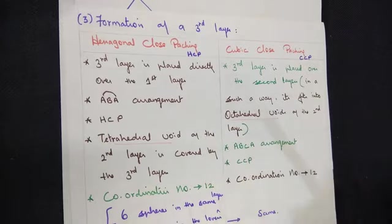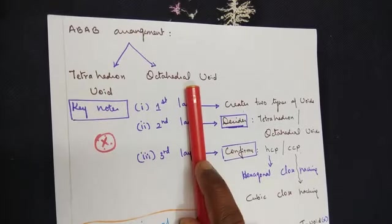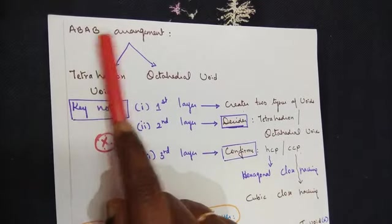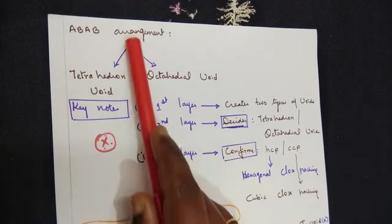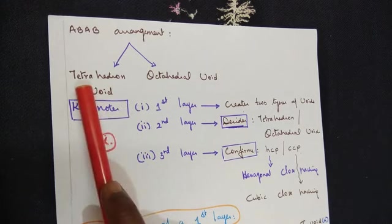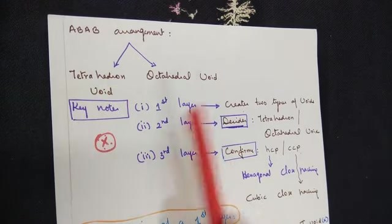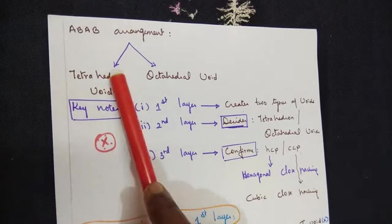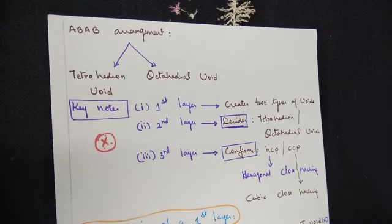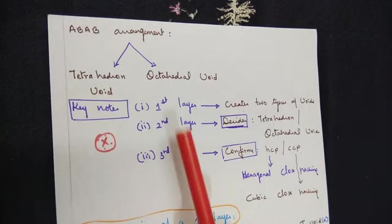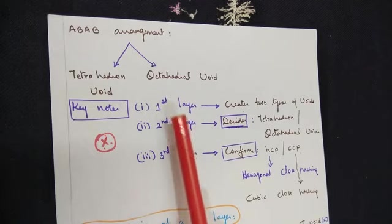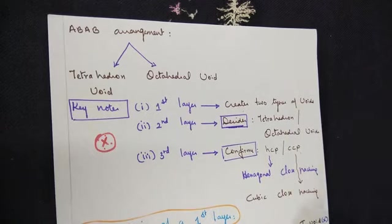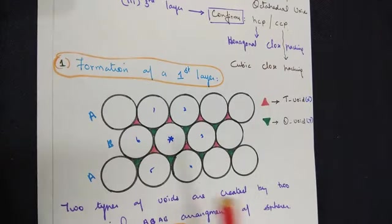Hexagonal close packing and cubic close packing are the result of the two types of voids found in an ABAB arrangement of atoms, ions, or molecules. The two types of voids are: one is a tetrahedral void, the other one is an octahedral void. To understand these voids we need to have knowledge of the work taking place in three different layers in an ABAB arrangement. Let's have a quick recap.